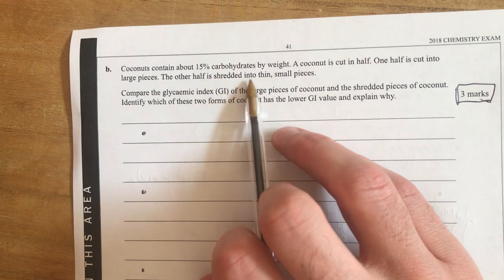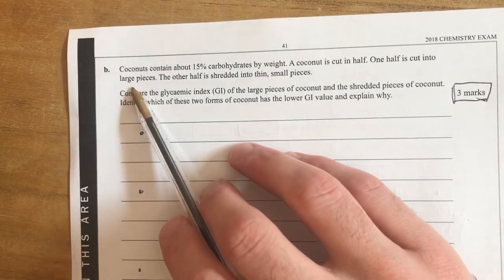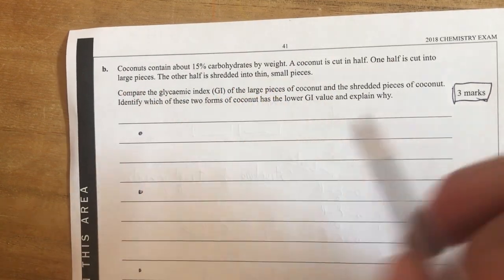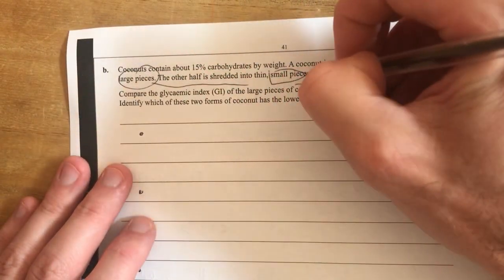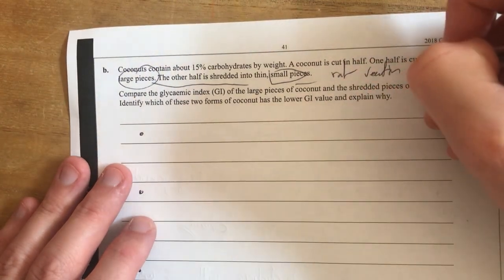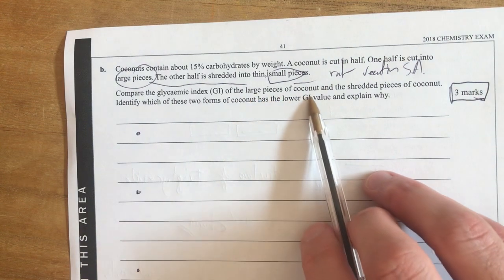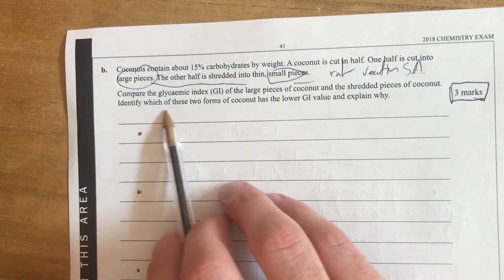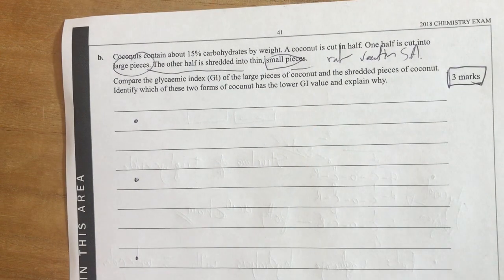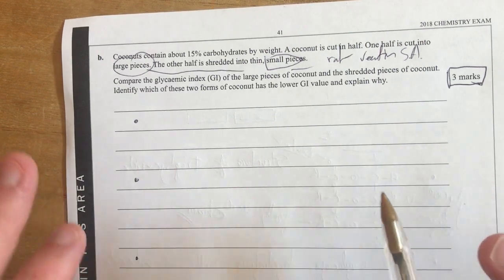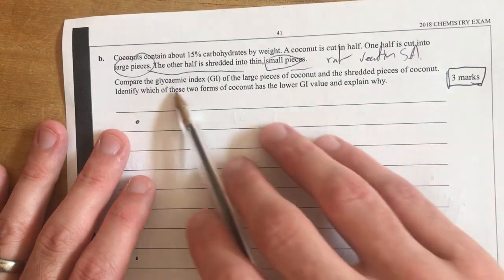Coconuts contain about 15% carbohydrates by weight. Coconut is cut in half, half of the cut is cut into large pieces, the other half is shredded into thin pieces so we're looking at surface area. So small pieces versus large pieces. You can think about this as rate of reaction or surface area based stuff. Compare the glycemic index of the large pieces of coconut and the shredded pieces of coconut. And identify which of these two forms of coconut has the lower GI and explain why. So this is a pretty clear question in terms of what's going on.